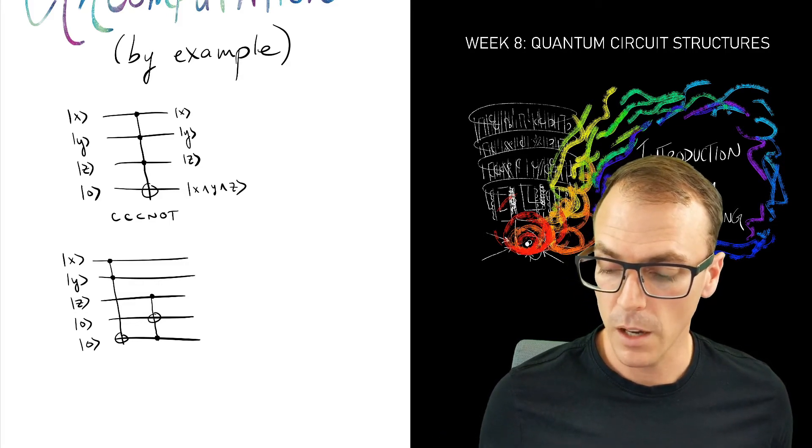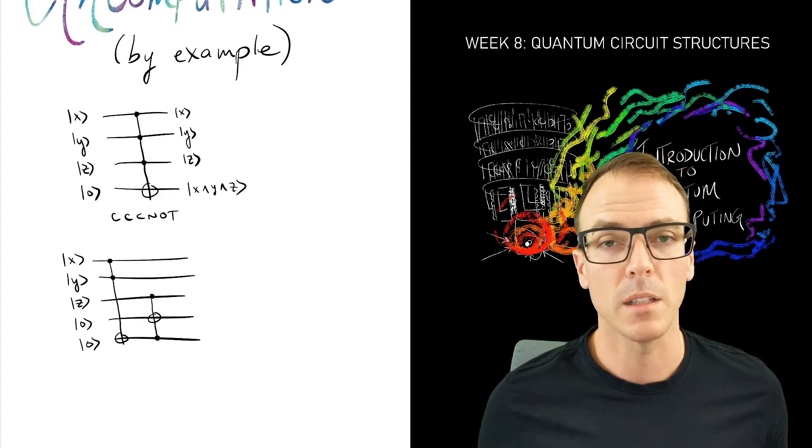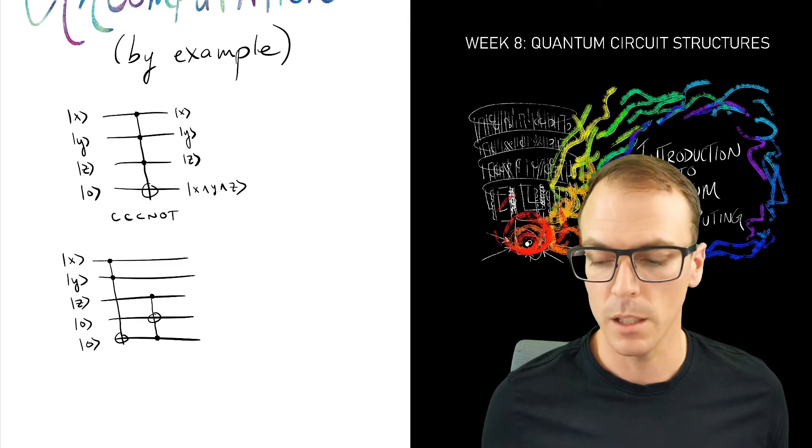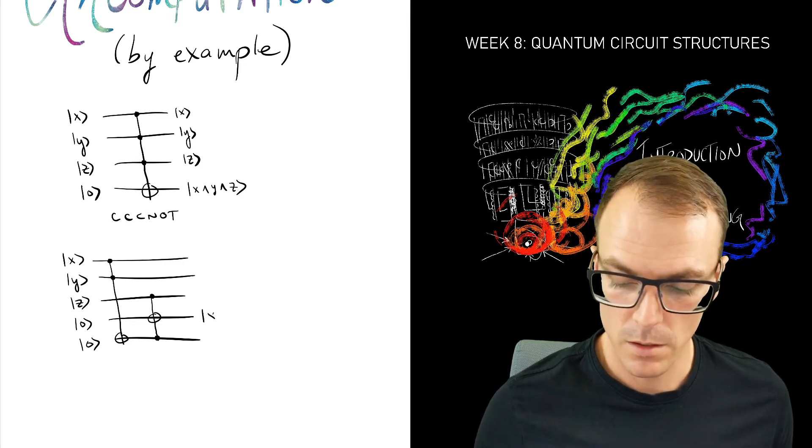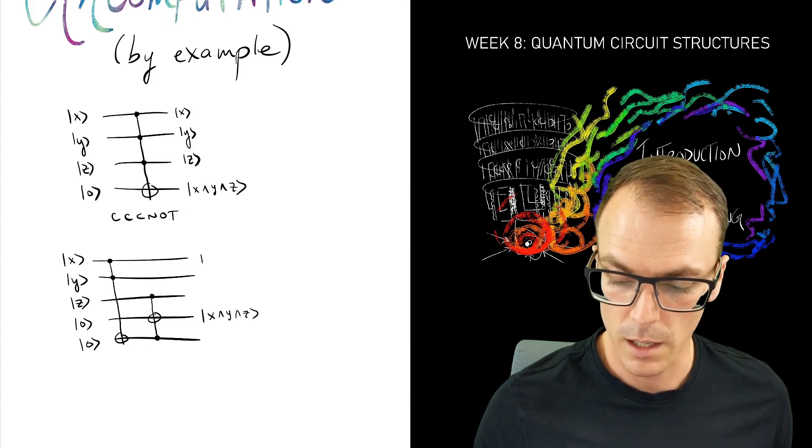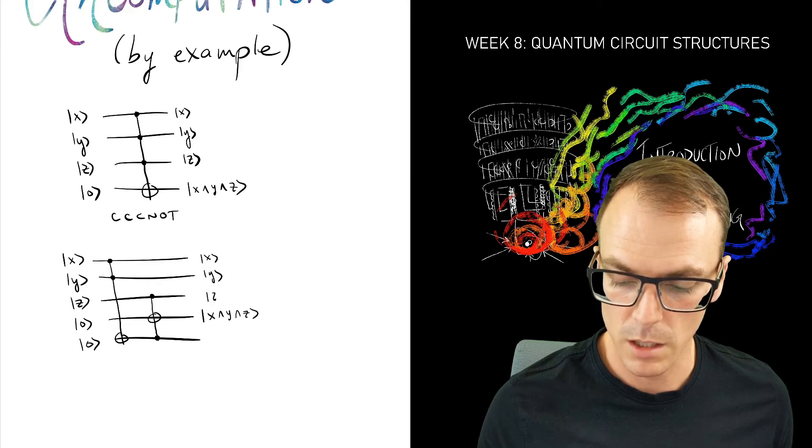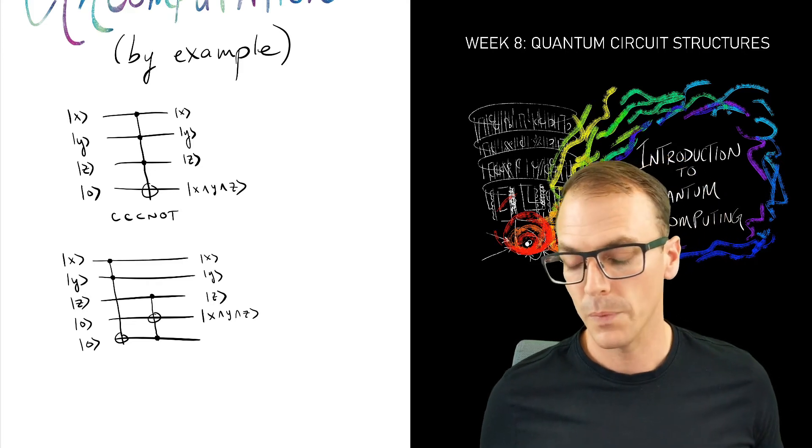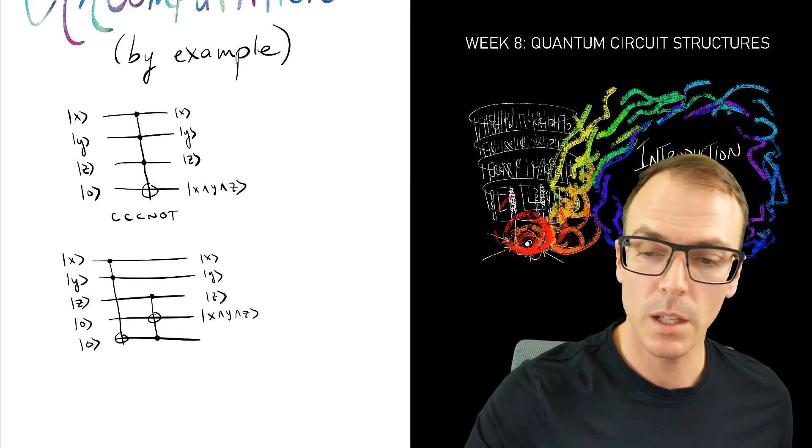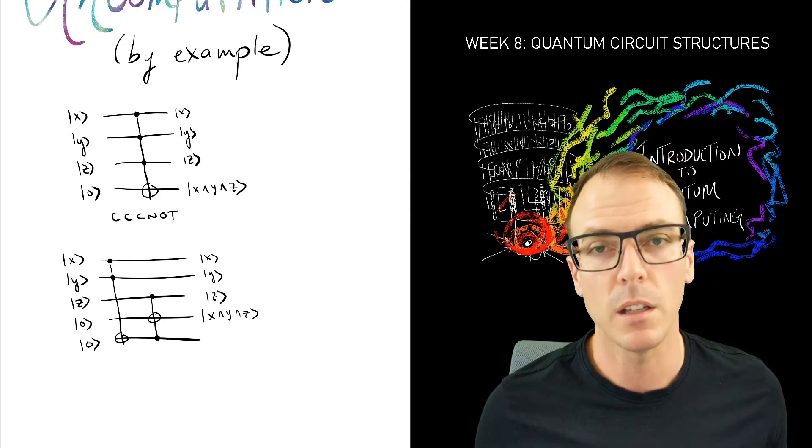And if any of these are zero, then nothing will happen to that target qubit. So here we have X and Y and Z. And we can see that we're not changing the bit values of these qubits.